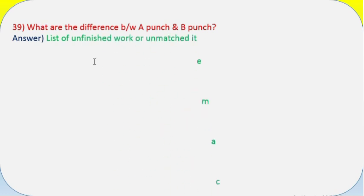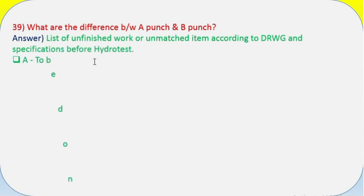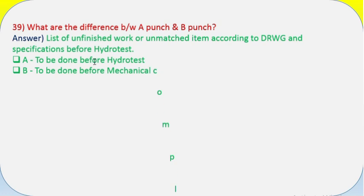Question 39: What are the differences between A punch and B punch? Answer: List of unfinished work or unmatched items according to drawing and specifications before hydrotest. A - to be done before hydrotest. B - to be done before mechanical completion.